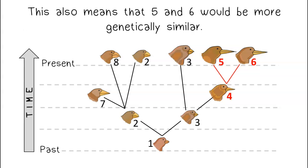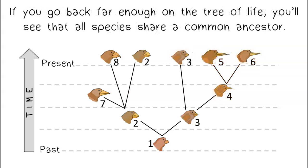This also means that five and six would be more genetically similar. If you go back far enough on the tree of life, you'll see that all species share a common ancestor.